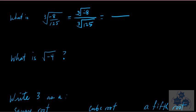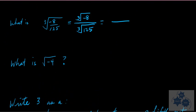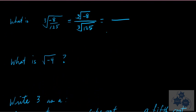The cube root of 125 — without your calculator. We know 4 cubed is 64. Going higher: 5 times 5 is 25, and 25 times 5 is 125. So the cube root of 125 is 5, because 125 is 5 times 5 times 5.